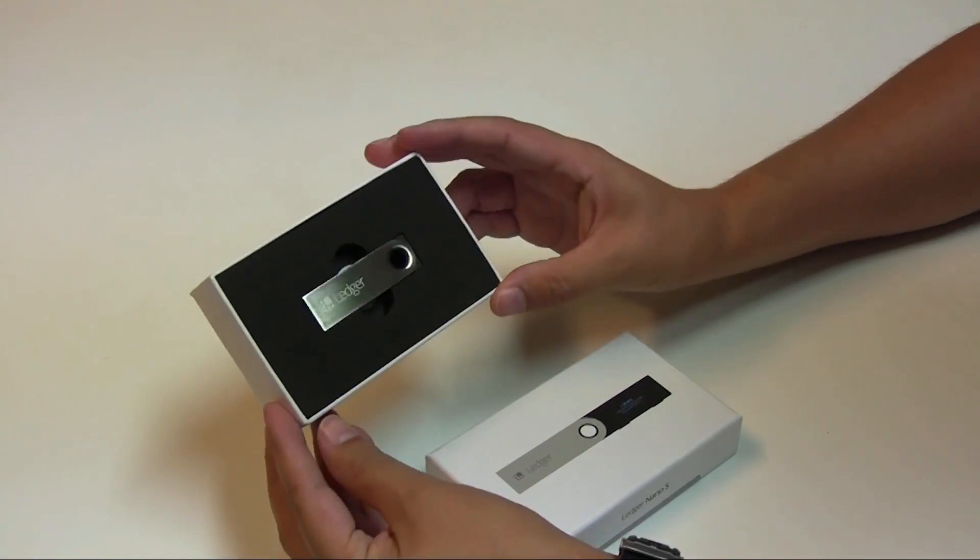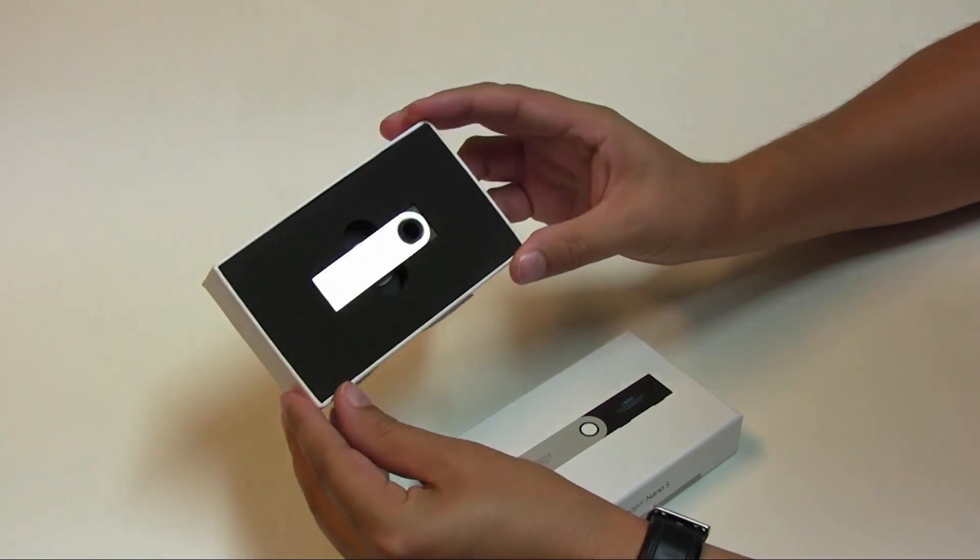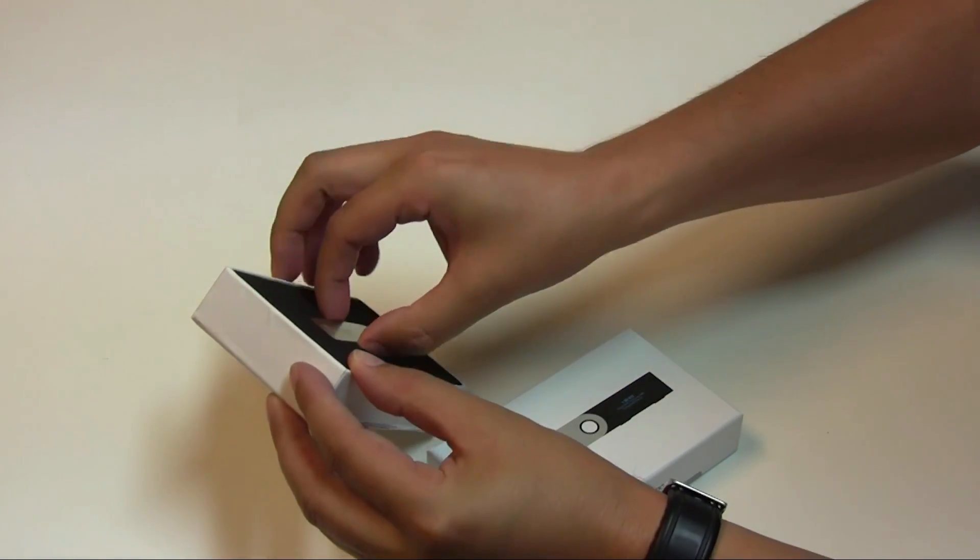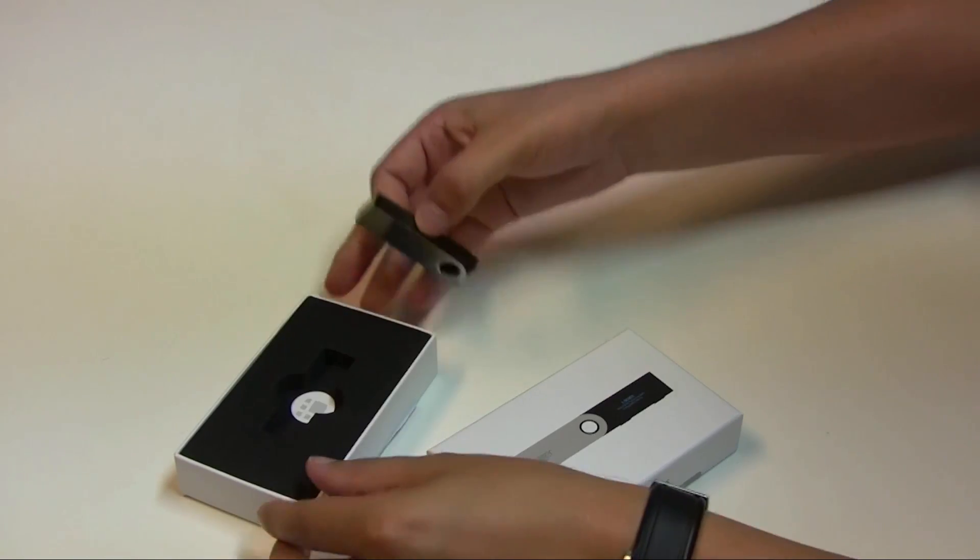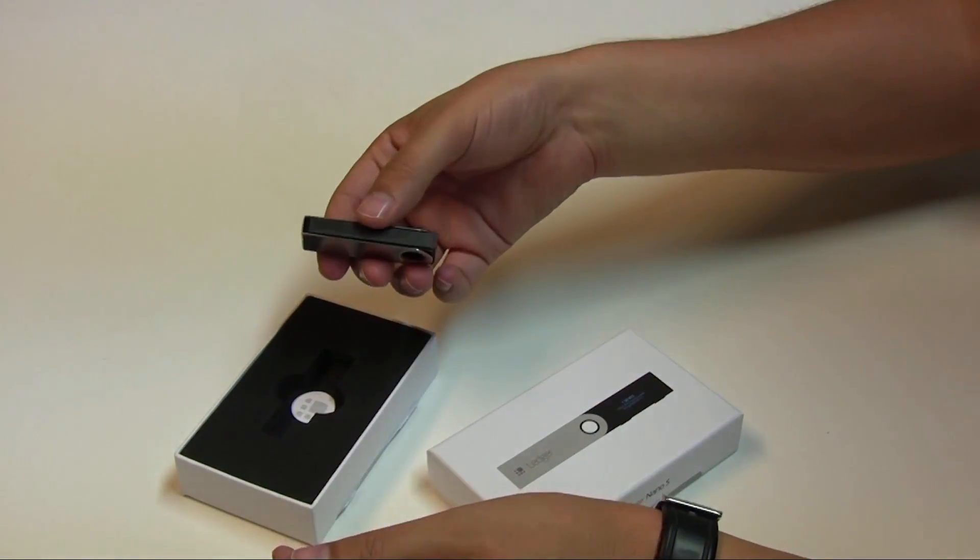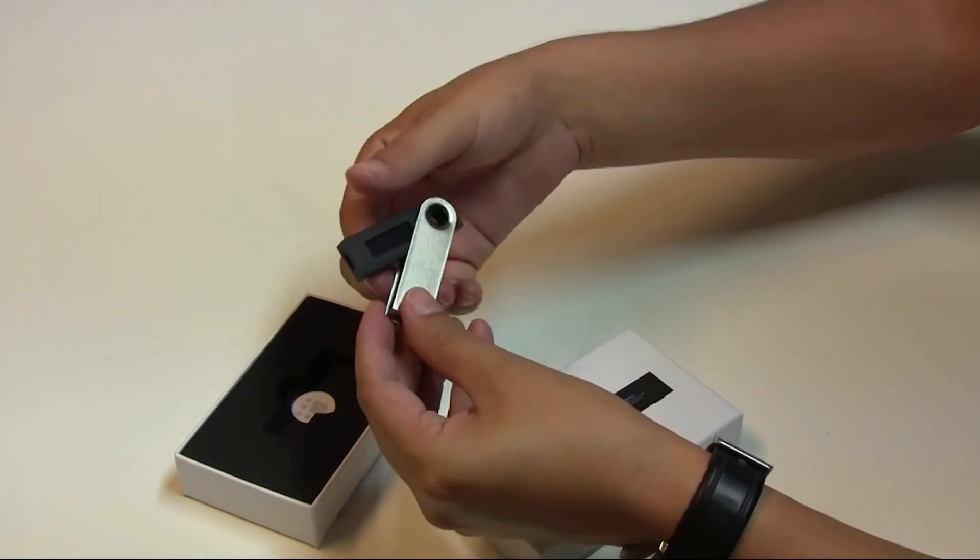Okay, so from the actual top, it just really looks like kind of a shiny USB key. It's about the same sort of size as a regular USB key. A little bit chunkier, I would say. It's like a chunky kind of a pen drive. But let's kind of slide it out and we'll have a look.